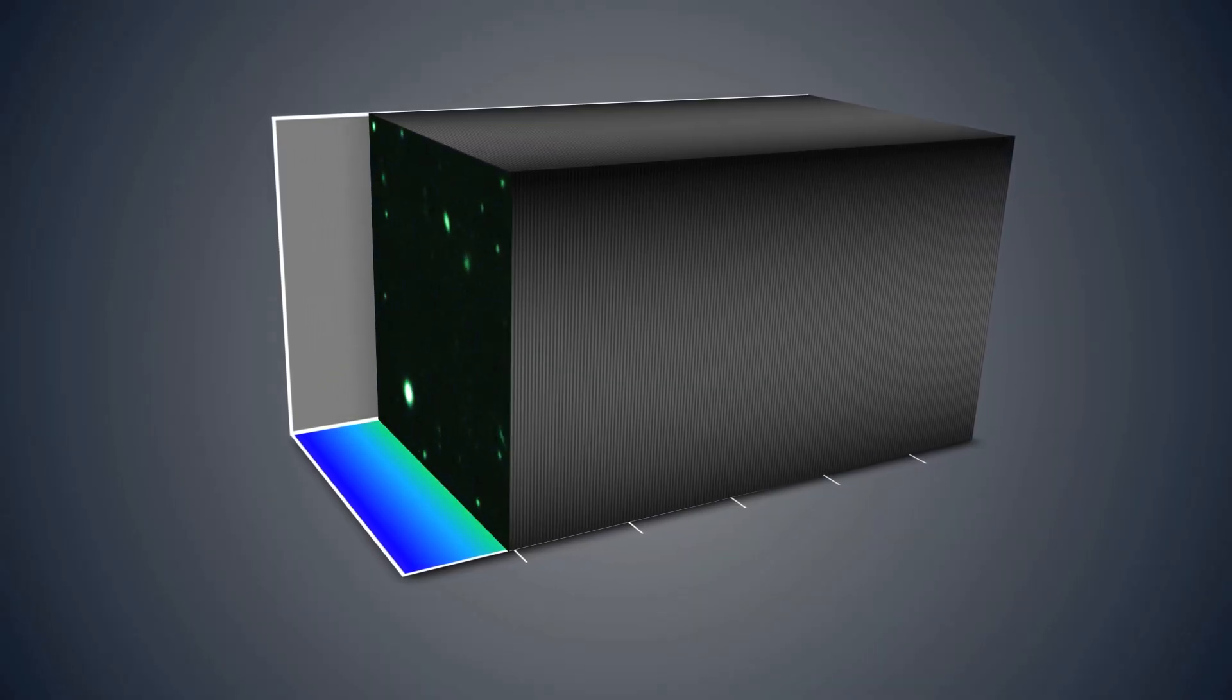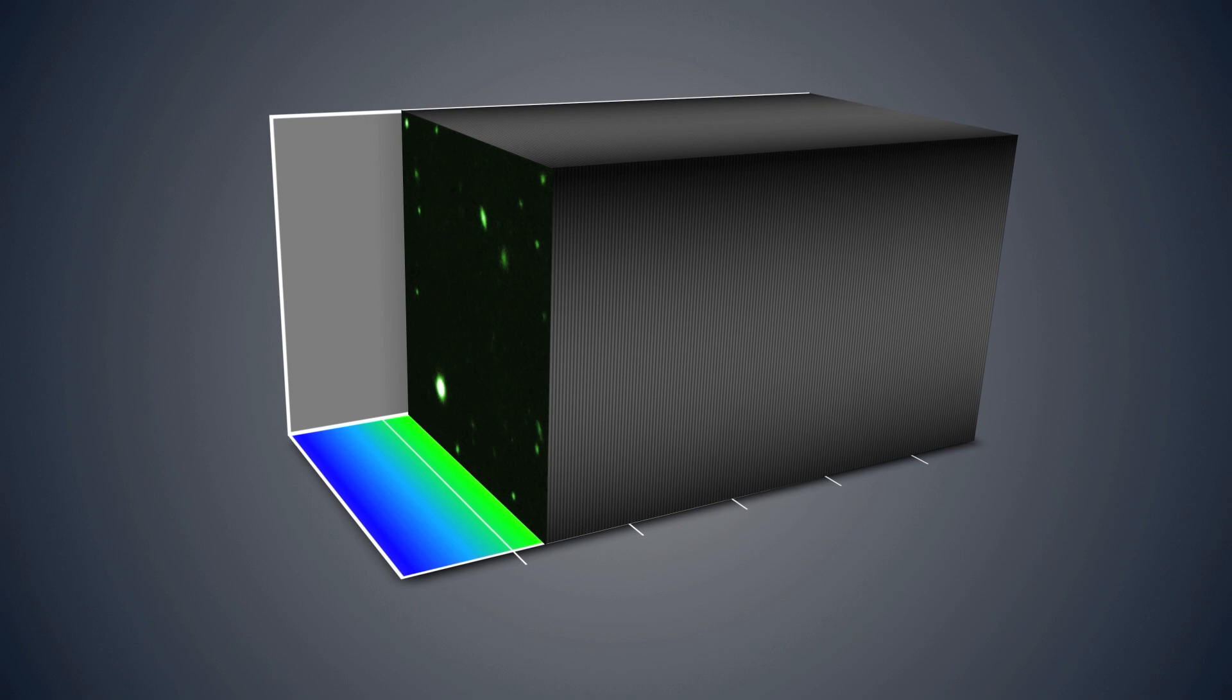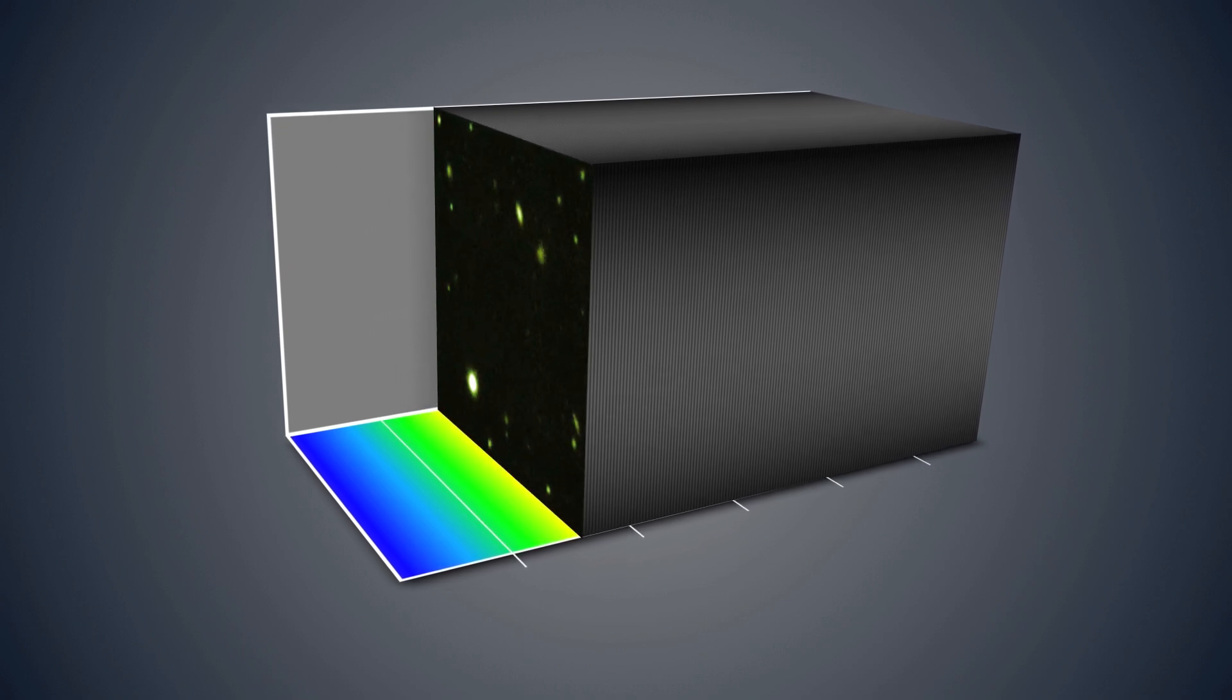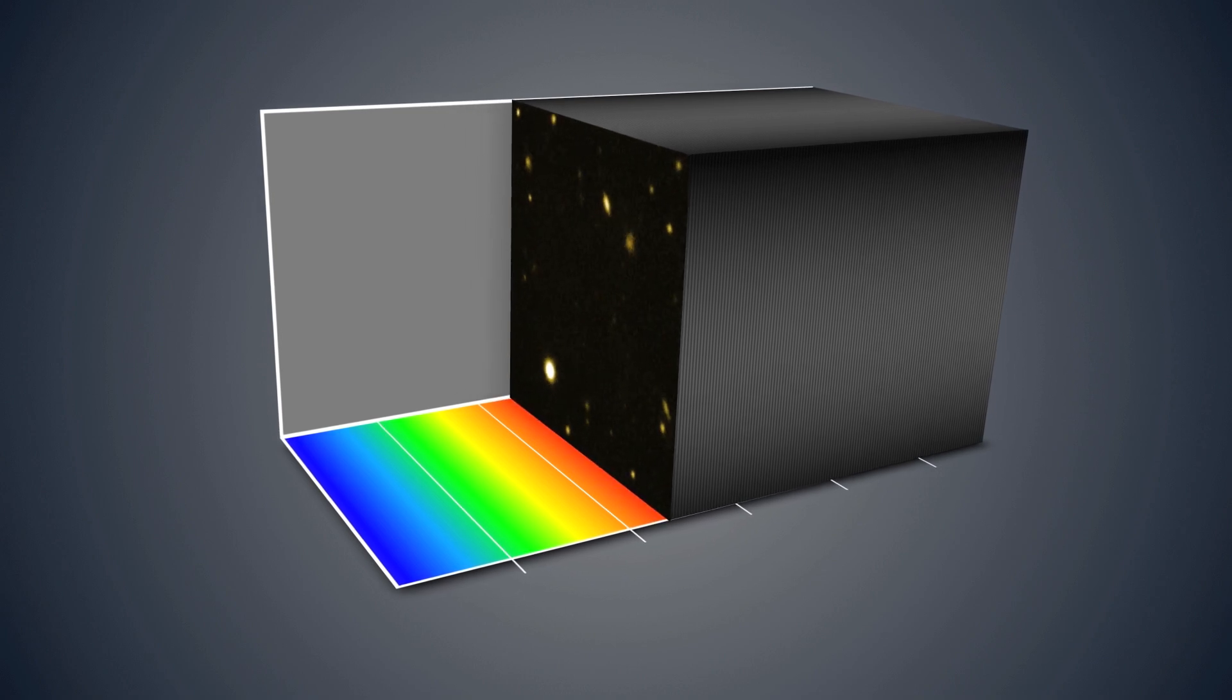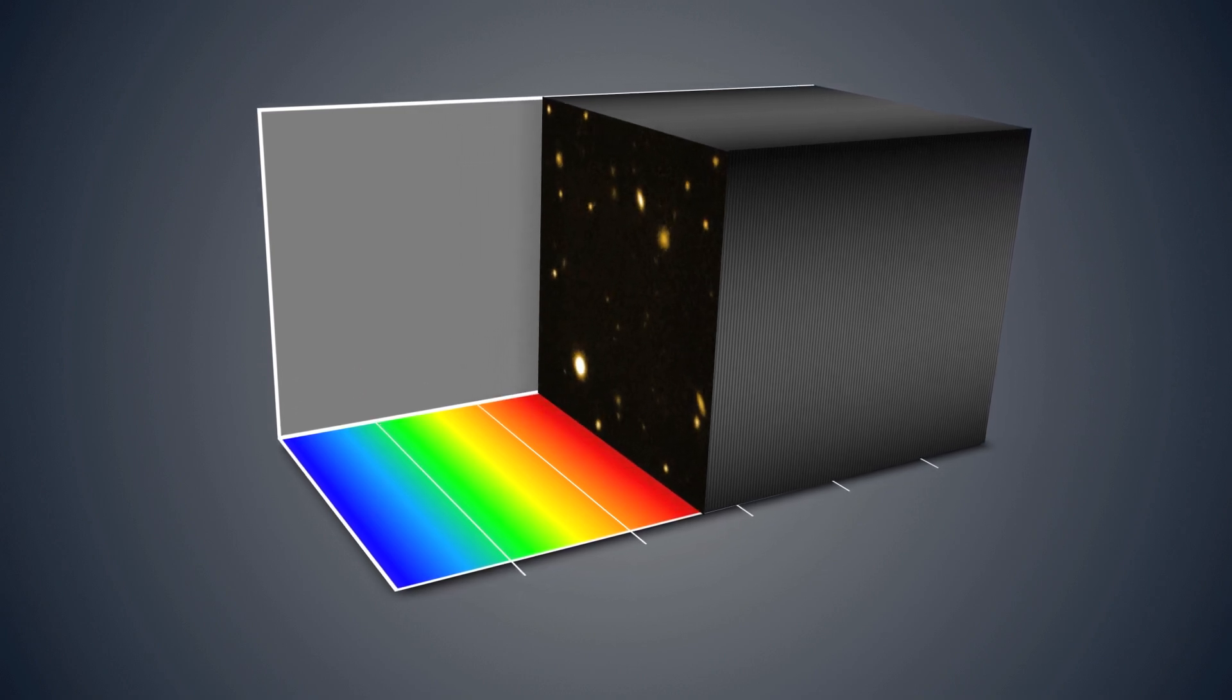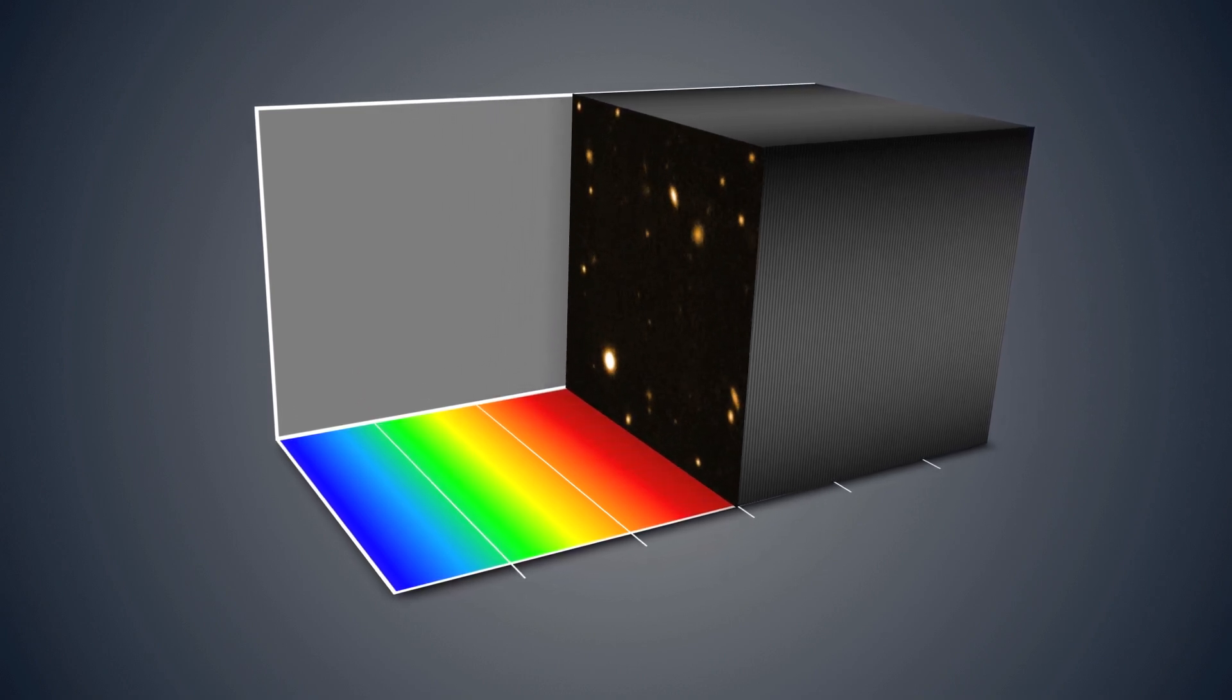The MUSE data contain a spectrum for every pixel in the image, about 90,000 in total, telling astronomers about the distance, composition, and internal motions of hundreds of distant galaxies.